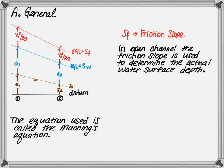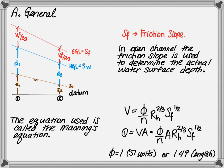To determine the depth of flow, one will use the Manning's equation. The Manning's equation states that velocity is equal to phi divided by roughness times hydraulic radius to the two-thirds power.